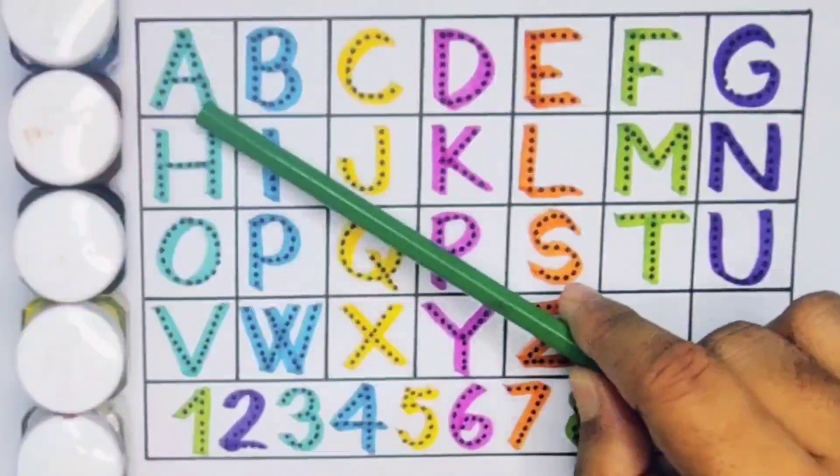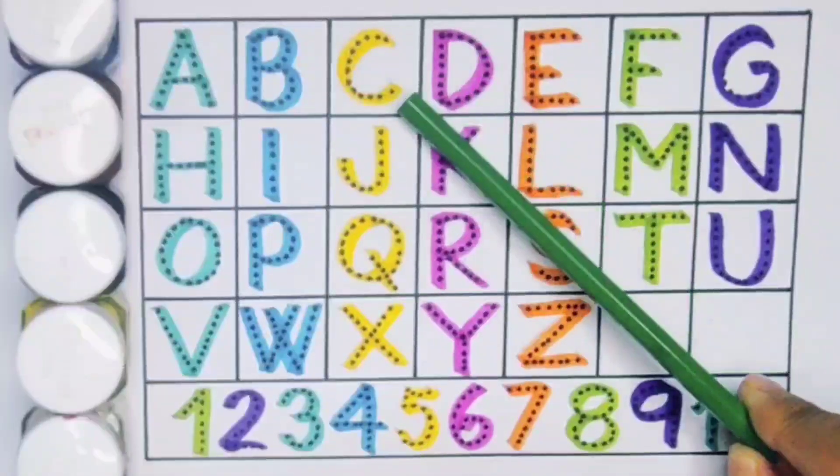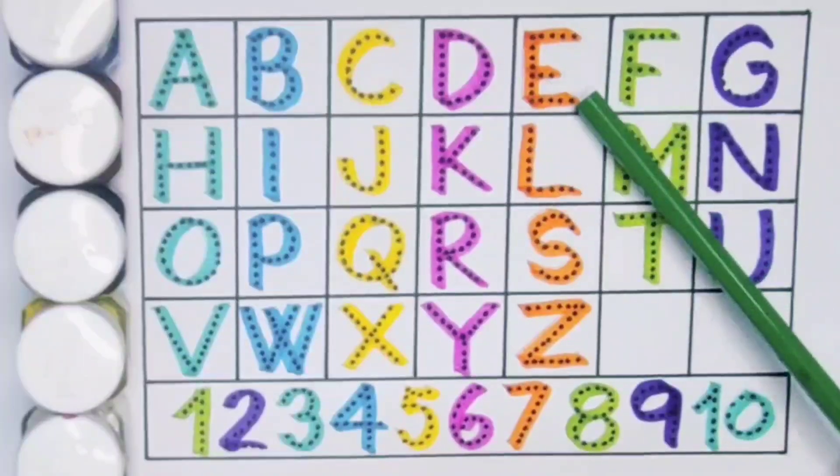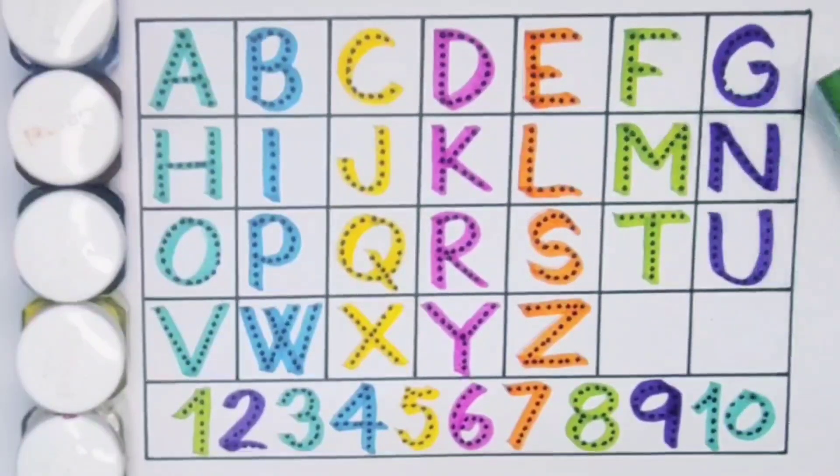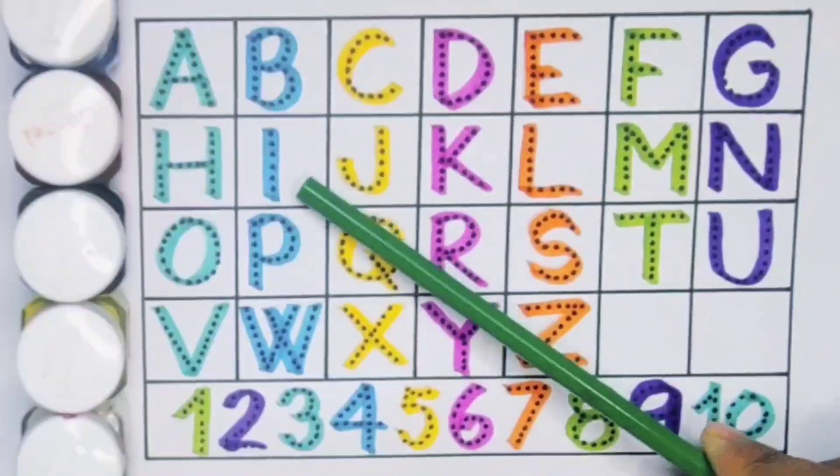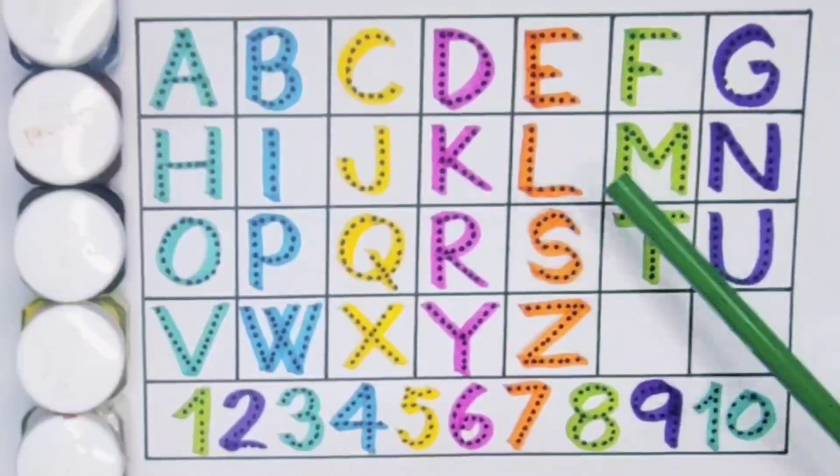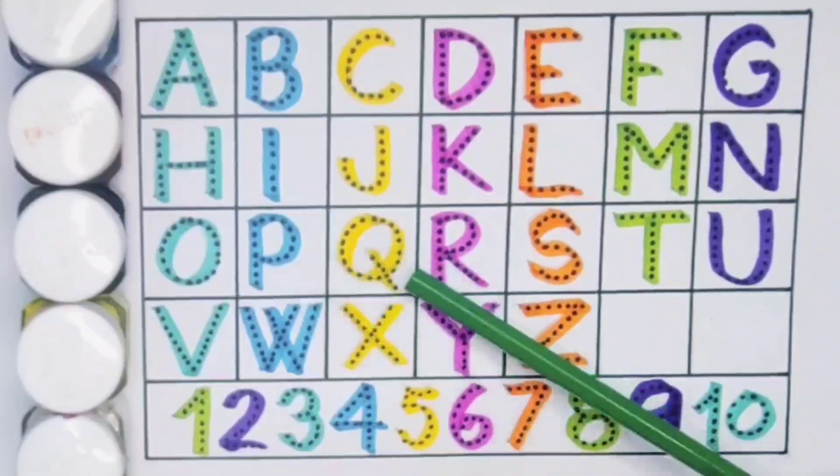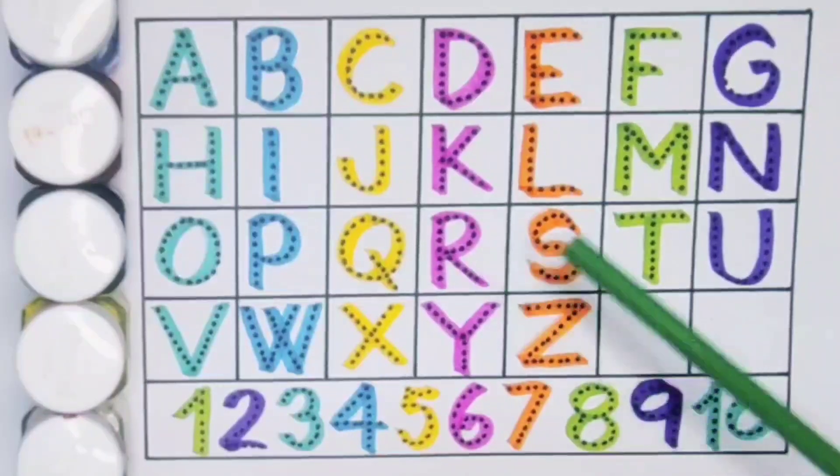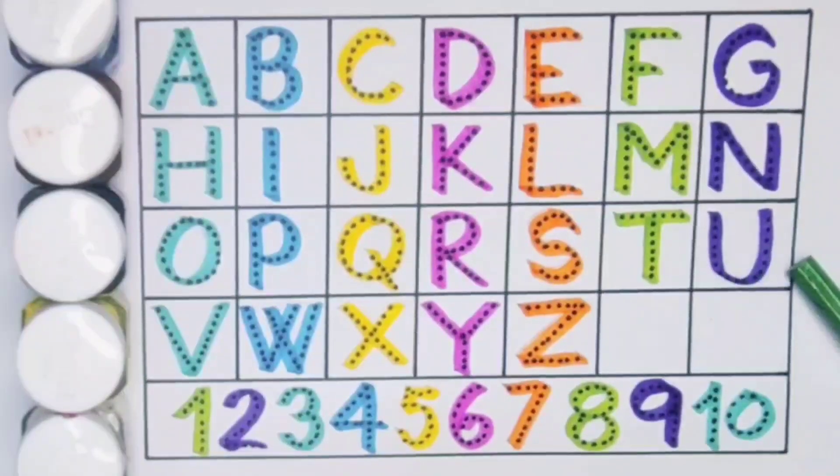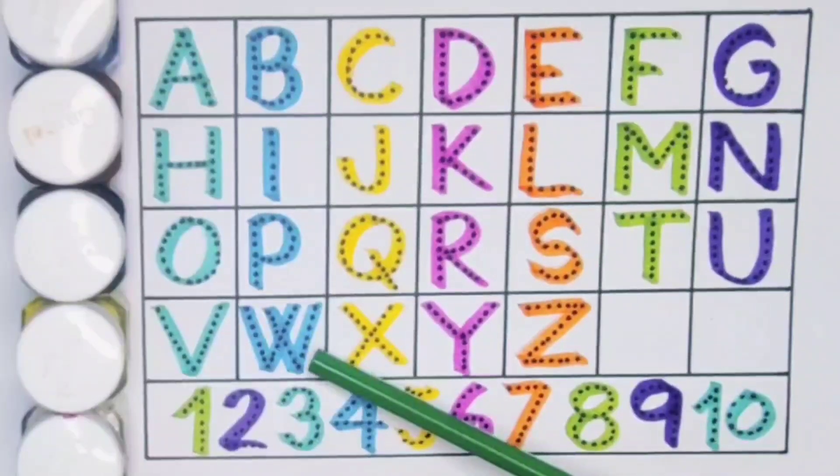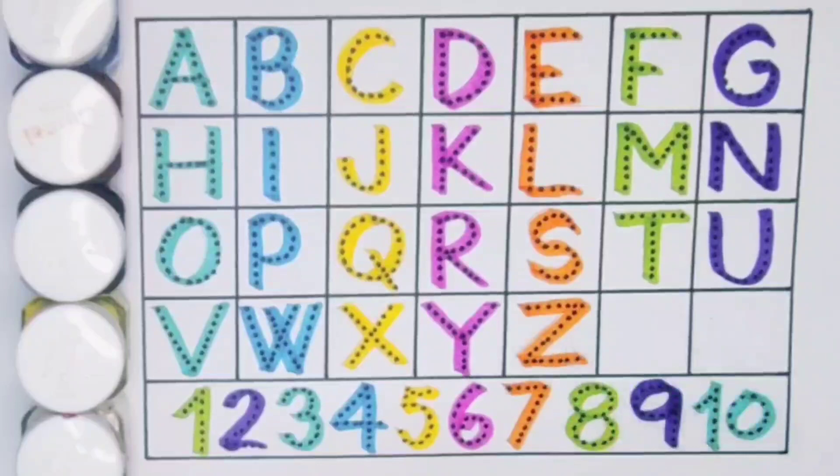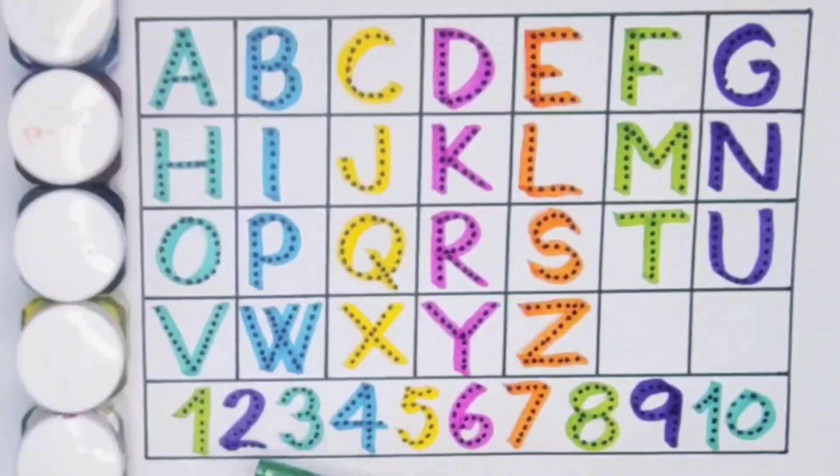What we learn? We learn A for Ant, B for Ball, C for Car, D for Doctor, E for Eye, F for Fan, G for Giraffe, H for Hand, I for Ink, J for Jellyfish, K for Kite, L for Lion, M for Moon, N for Nuts, O for Orange, P for Paper, Q for Quail, R for Rabbit, S for Star, T for Tiger, U for Uniform, V for Vegetable, W for Water, X for X-Ray, Y for Yogurt, and Z for Zoo. Now the numbers counting: number 1, number 2, number 3, number 4, number 5, number 6, number 7, number 8, number 9, 1-0 ten.